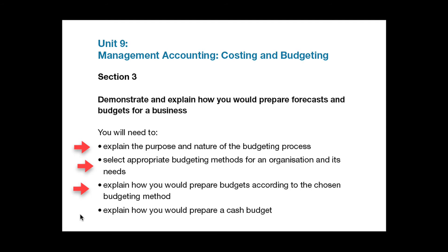And finally, bullet point 4: for many small organisations the cash budget is the budget, but in larger organisations a cash flow budget is often prepared as a sub budget dealing only with cash that is received from sales and lodged in the bank, then consumed by operational activities. This is usually linked to a cash flow forecast. You should explain how, for a reasonably complex activity area, you would prepare one of these budgets.